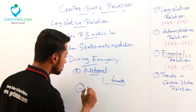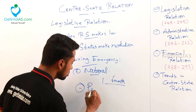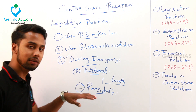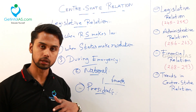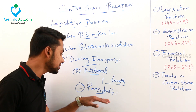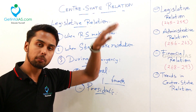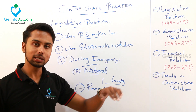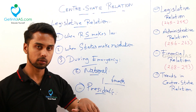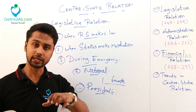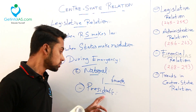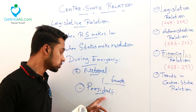When you are studying about center-state relation, one word is very important — that is federalism. This word becomes important when you study about center-state relation. So what do you mean by federalism? It is a principle where federalism means two governments, a distinction of power — a separation of power. That is the exact definition of federalism.